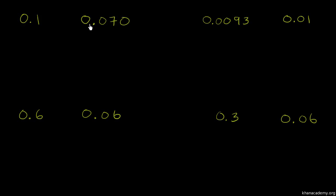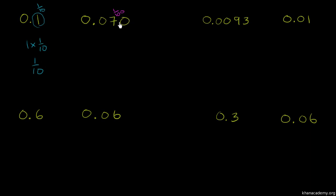Let's compare 0.1 to 0.070. This 1 right over here is in the tenths place, so it literally represents 1 times 1 tenth, which is obviously the same thing as 1 tenth. Now when we look at this number right over here, it has nothing in the tenths place. It has 7 in the hundredths place. So this number can be rewritten as 7 times 1 over 100, or 7 hundredths.